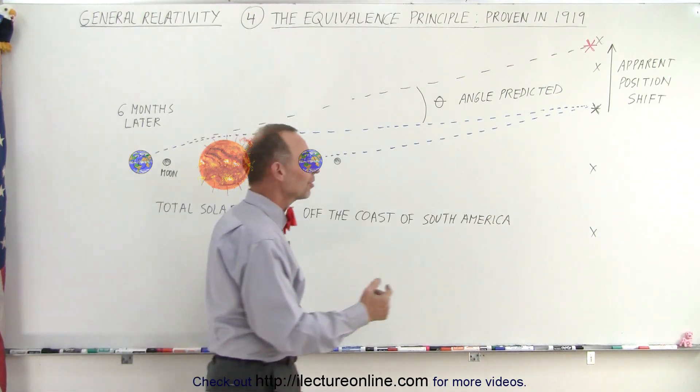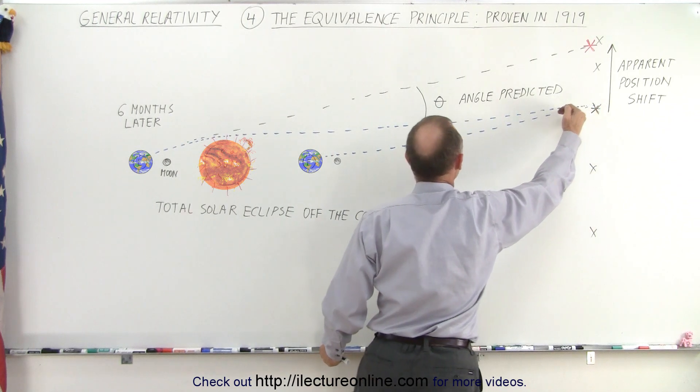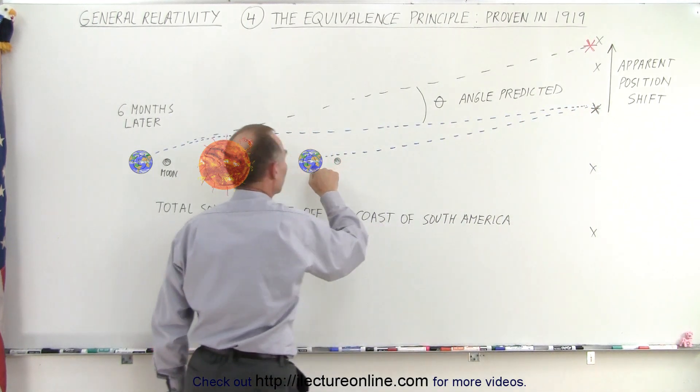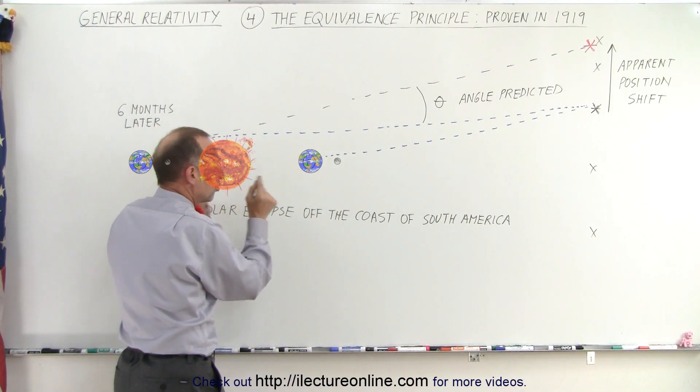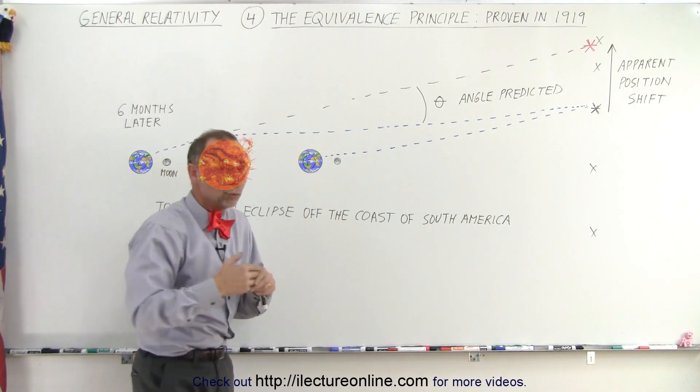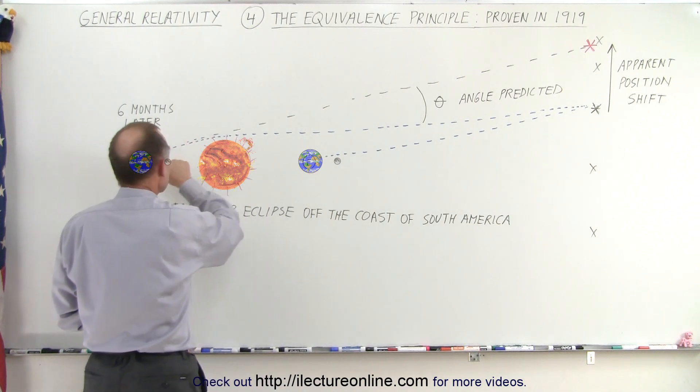So what happened was, for example, this star right here, you can see that six months earlier, the light went directly to the earth. Now, the distance from here to here is so small, that the angle, of course, would not change whether or not the earth was here or here.